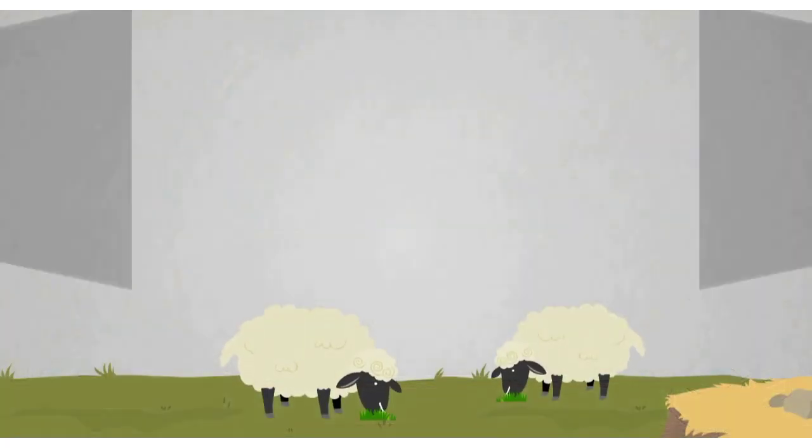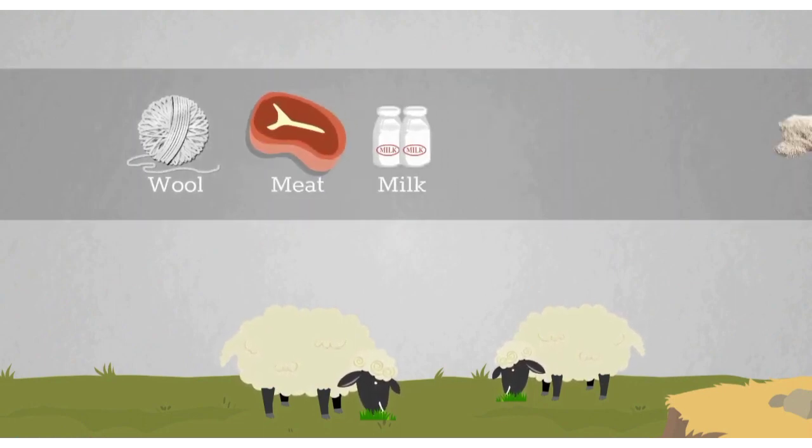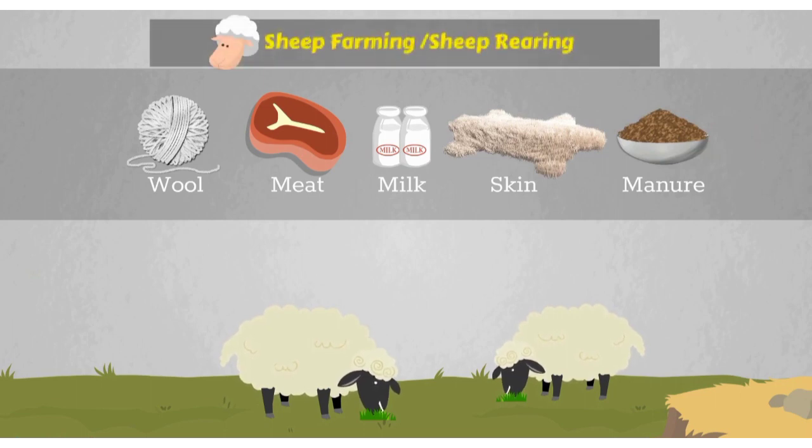The next topic is rearing and breeding of sheep. We are going to cover this topic with the help of a video - please watch it carefully and understand how rearing and breeding of sheep takes place. Rearing of sheep for obtaining wool, meat, milk, skin, and manure is called sheep farming or sheep rearing.